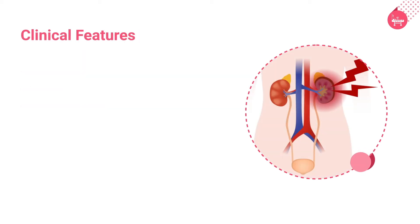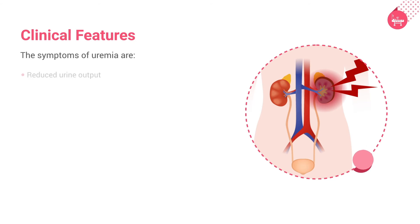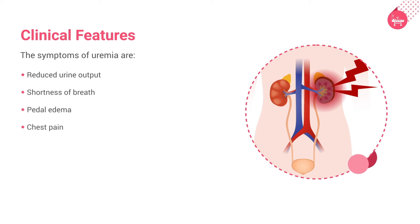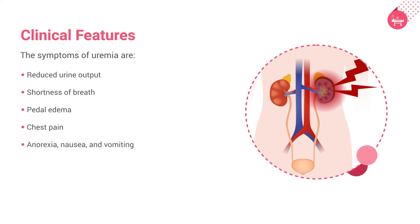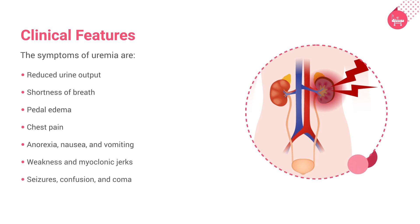Patients with acute kidney injury most commonly present with uremia-like symptoms, which include reduced urine output, shortness of breath, pedal edema, chest pain or uremic pericarditis, anorexia, nausea and vomiting, weakness and myoclonic jerks, seizures, confusion, and coma.